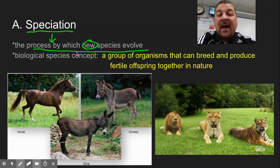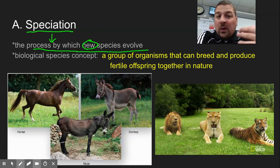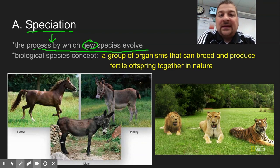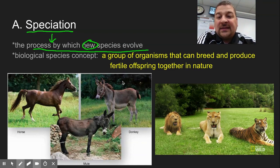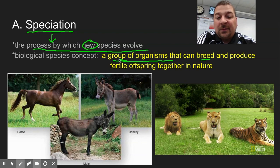To go back a step even further, what is the biological definition of a species? The biological definition of a species is a group of organisms that can breed and produce fertile offspring. Key there being fertile offspring.